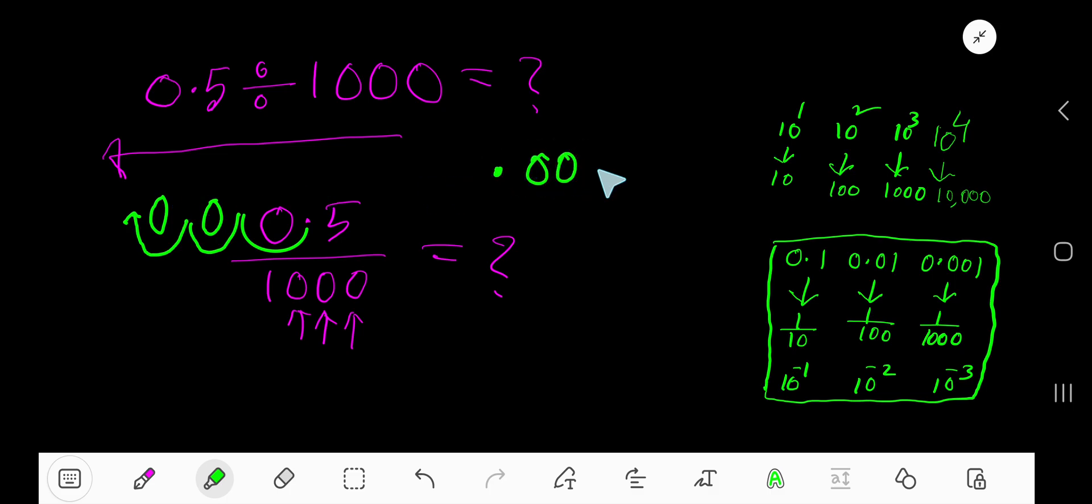come here. That is 0.0005. You can add one more zero here to indicate that this is less than one.